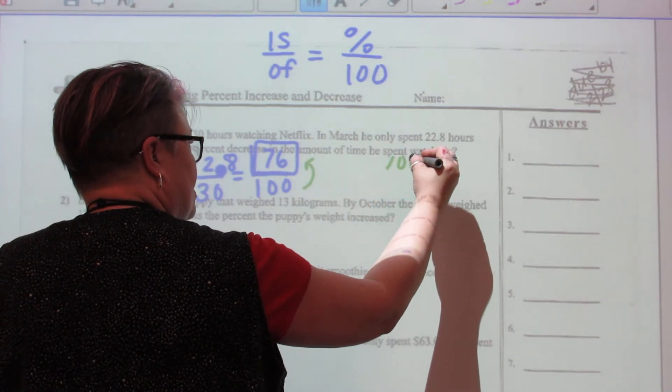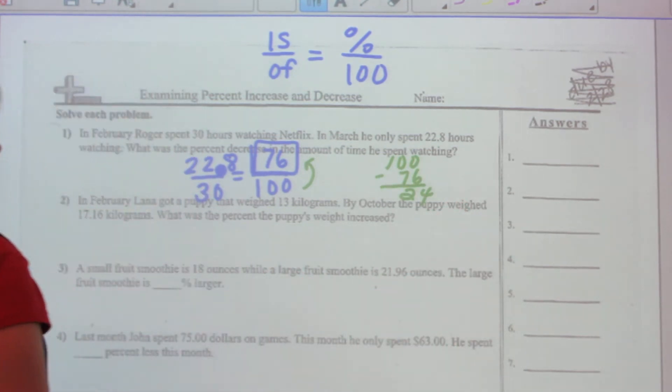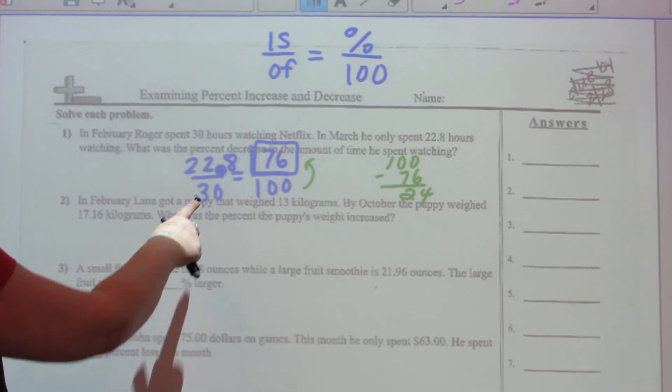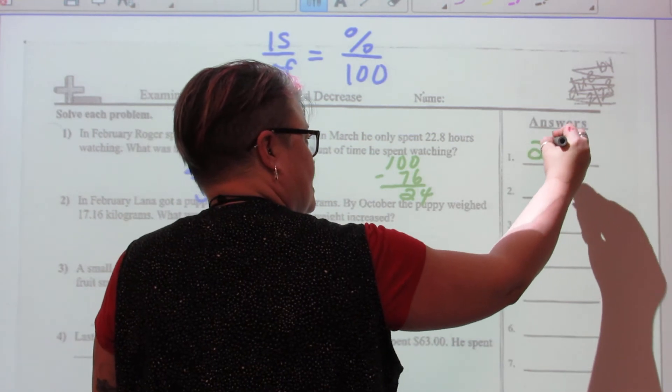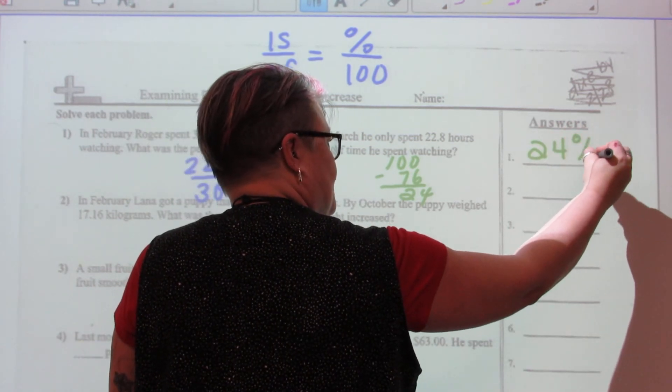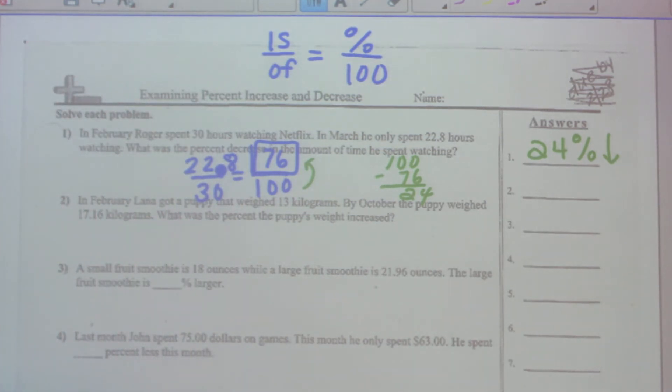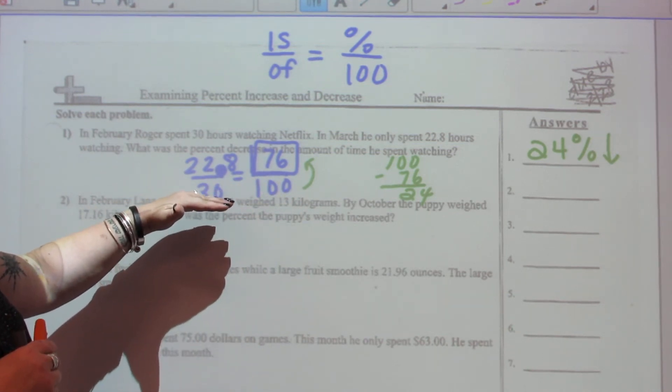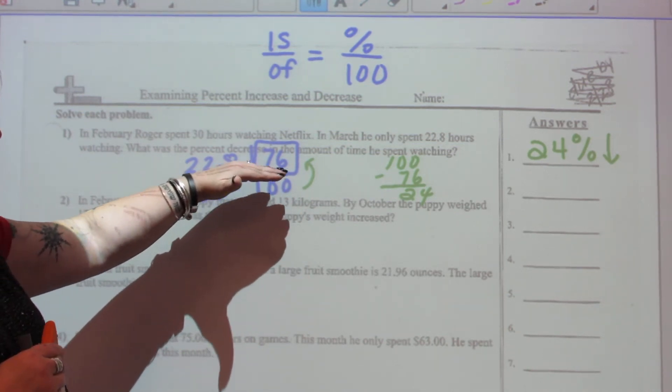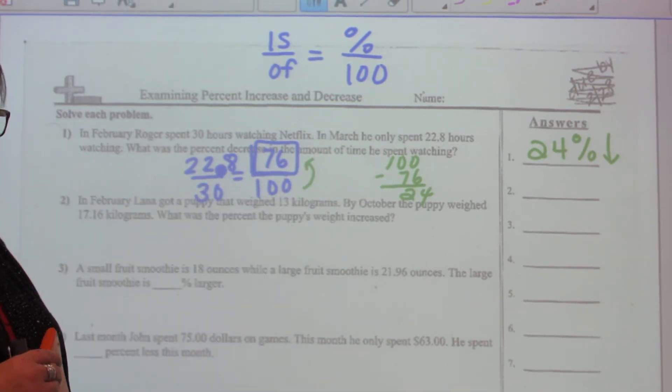Well, I have to know what 100 minus 76 is, and that's 24. So my answer is that his watching went down by 24 percent. I hope that makes sense. He went down 24 percent and we use an arrow pointing down like this to show that we mean percent decrease. So the amount of time that Roger spent, he was spending a 100 percent or 30 hours, it goes down to 76 percent, so it decreased by 24 percent.